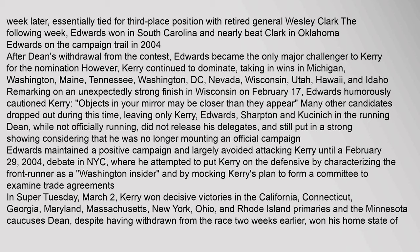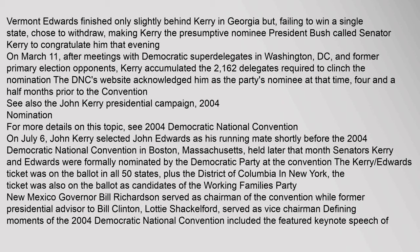On Super Tuesday, March 2, Kerry won decisive victories in California, Connecticut, Georgia, Maryland, Massachusetts, New York, Ohio, and Rhode Island primaries, and the Minnesota caucus. Dean, despite having withdrawn two weeks earlier, won his home state of Vermont. Edwards finished only slightly behind Kerry in Georgia but, failing to win a single state, chose to withdraw, making Kerry the presumptive nominee. President Bush called Senator Kerry to congratulate him that evening. On March 11, after meetings with Democratic superdelegates, Kerry accumulated the 2,162 delegates required to clinch the nomination.